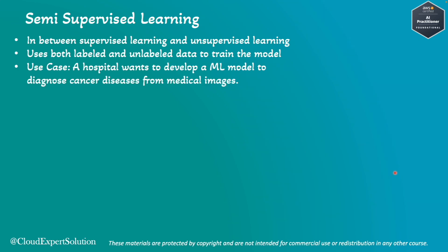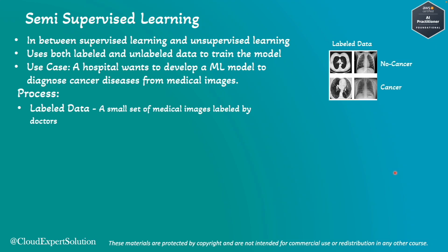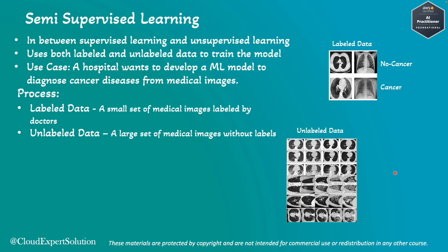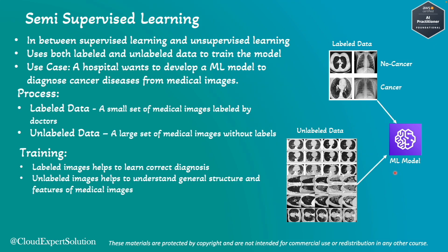One common use case could be a hospital that wants to develop a machine learning model to diagnose cancer diseases from medical images. They might not have all the labeled data. However, the hospital has a small set of medical images labeled by doctors — images labeled as cancer versus non-cancer. They also have a large set of medical images which are unlabeled. During training, both the labeled and unlabeled data are fed to the model. The labeled images help the model learn the correct diagnosis, whereas the unlabeled images help the model understand the general structure and features of medical images.